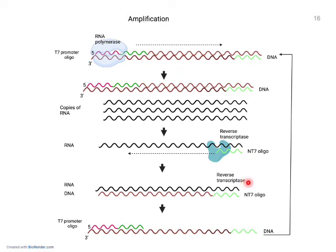This creates a hybrid RNA-DNA molecule. The RNase H activity of the reverse transcriptase destroys the RNA strand. The T7 oligo then binds to the resulting single-stranded DNA, and RNA polymerase using the T7 promoter produces more copies of RNA, cycling back to the beginning so that the original template is continually amplified.